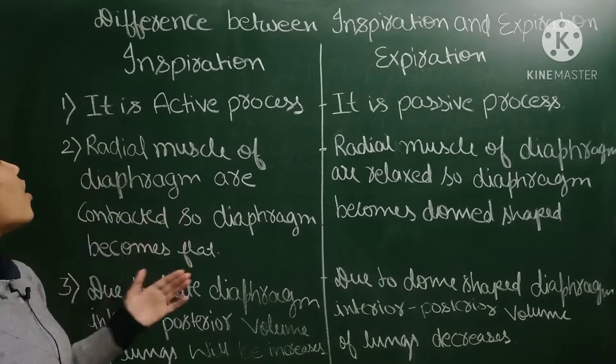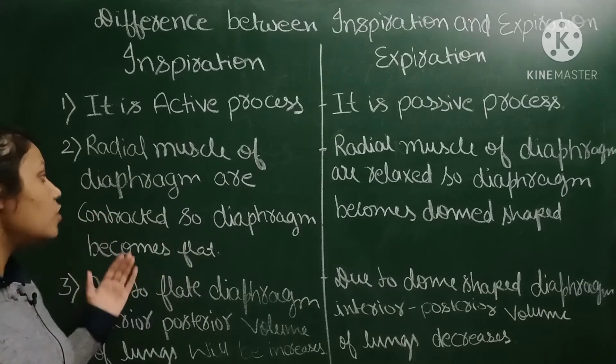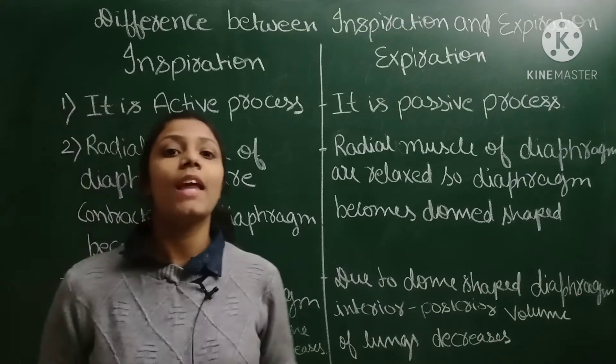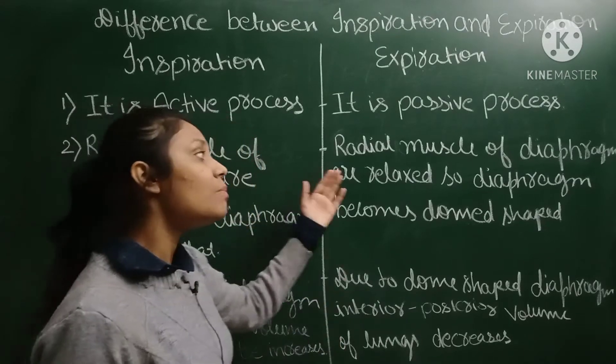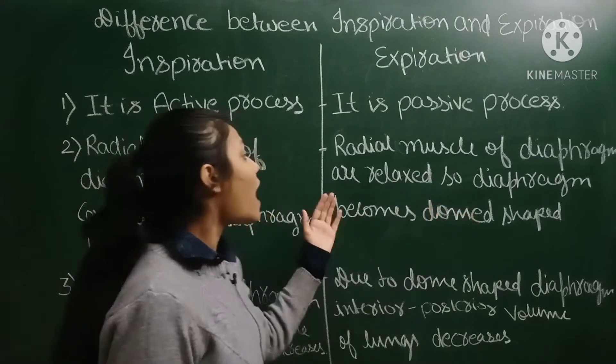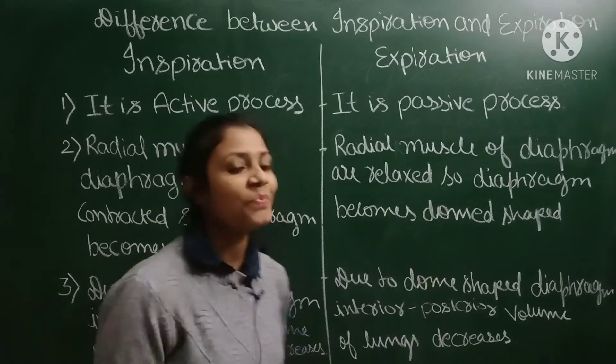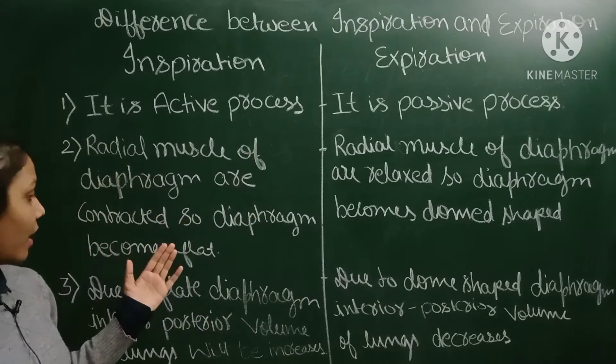Radial muscles of the diaphragm are contracted, so the diaphragm becomes flat. Whereas in expiration, radial muscles of the diaphragm are relaxed, so the diaphragm becomes dome shaped.